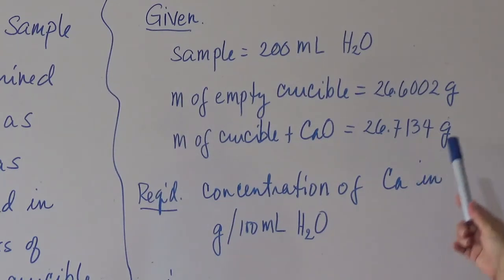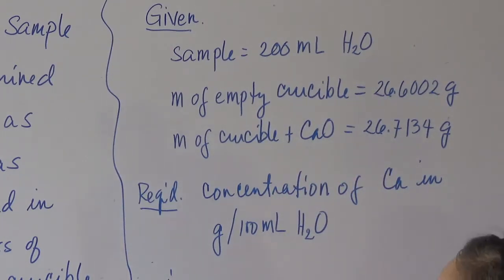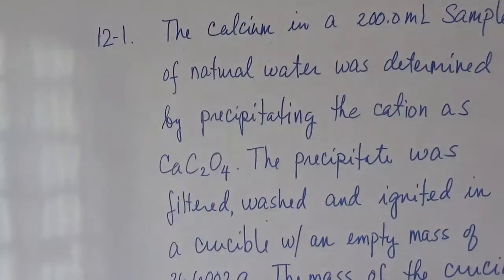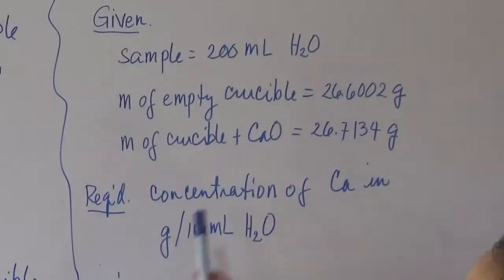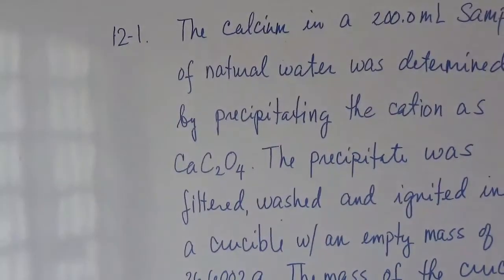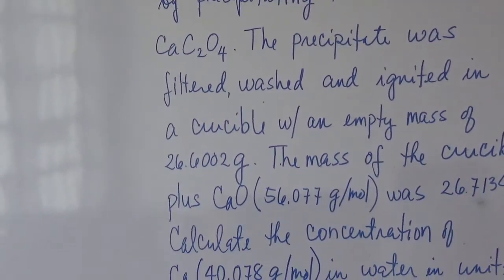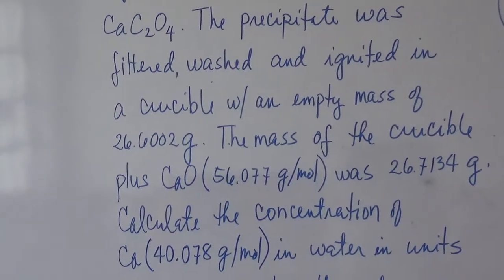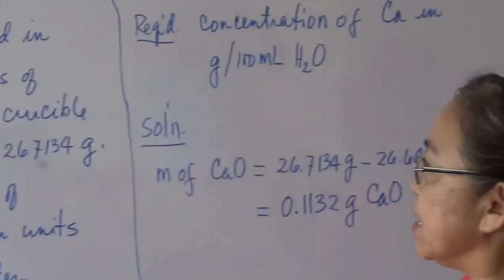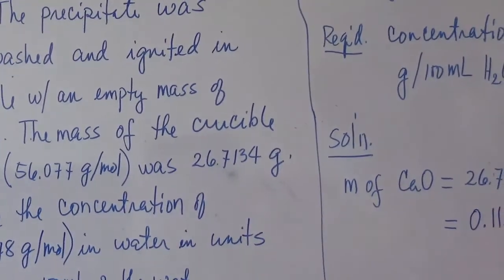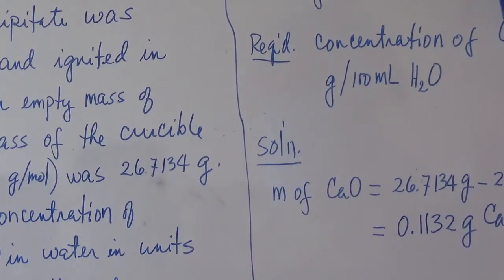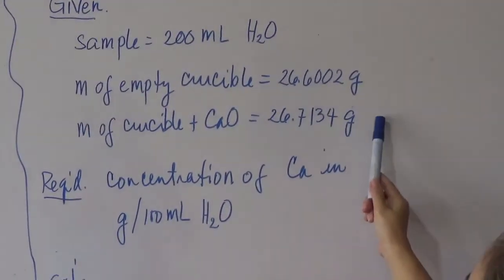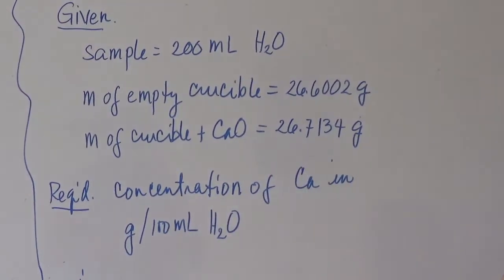The precipitate is placed in the crucible and ignited. When calcium oxalate is ignited, carbon dioxide is released, so the residue remaining is calcium oxide. That is why we have the mass of the crucible and calcium oxide — it is no longer calcium oxalate because ignition has removed the CO₂. The residue, calcium oxide, remains in the crucible with a combined mass of 26.7134 g.